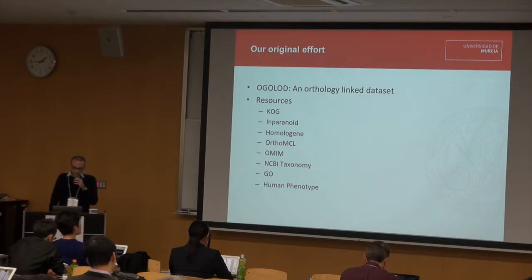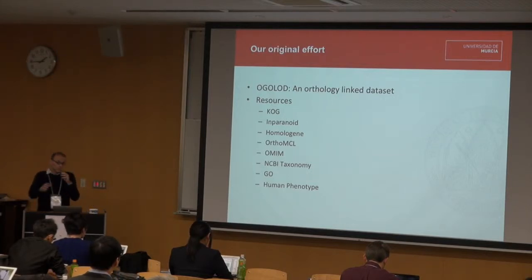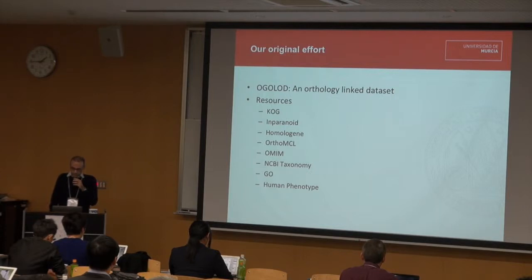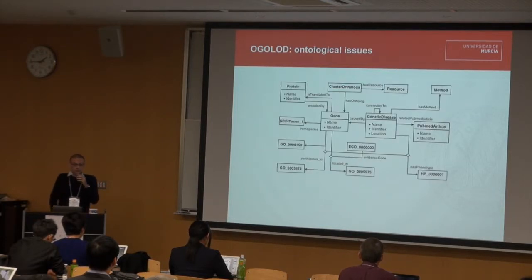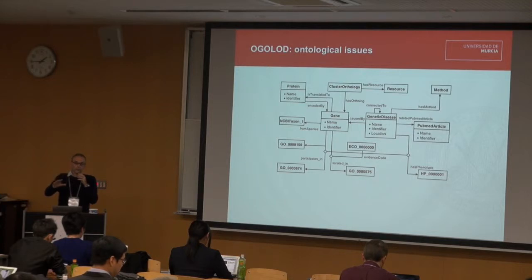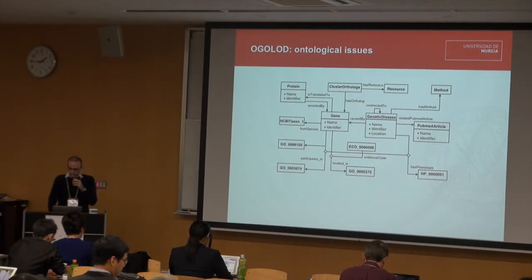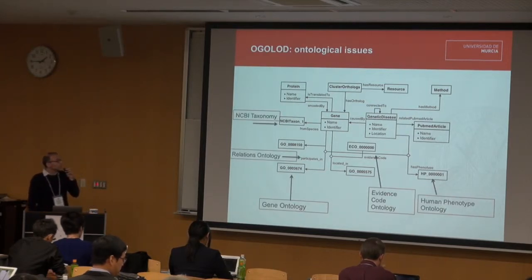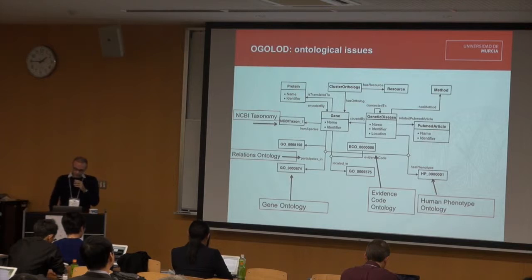We integrated information from four orthology resources — InParanoid, OrthoMCL, and others — and we integrated this information with genetic disorders from OMIM, the NCBI taxonomy, the Gene Ontology, and the Human Phenotype Ontology. We built a small ontology called the OGO ontology, which focused on the aspects relevant for our research project, so we didn't develop a whole ontology of orthology. One of the good properties of this ontology was the reuse of existing ontologies like the NCBI taxonomy, the Relations Ontology, the Gene Ontology, the Evidence Code Ontology, and the Human Phenotype Ontology, in order to provide interoperability with other resources as well.